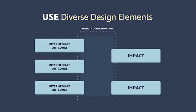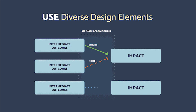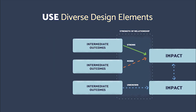Using different types of lines and arrows allows us to show relationships and the strength of those relationships. A bolder or more solid line can convey a stronger relationship or hypothesized relationship between items. A solid green line is labeled strong, a dashed orange line is labeled mixed, and a dotted blue line is labeled unknown.